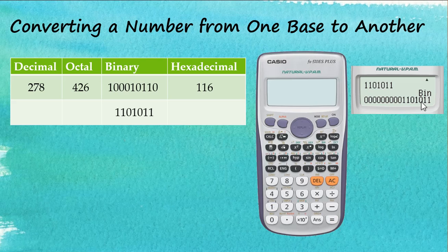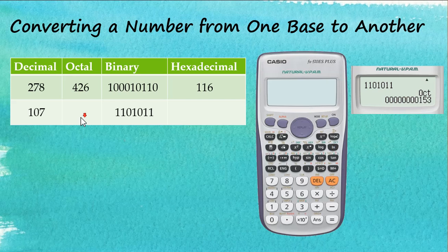We would like to know this binary number in other bases. In decimal, 1101011 is 107. In octal, this is 153. And in hexadecimal, this is 6B. That's how we convert a number from one base to another.